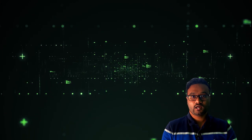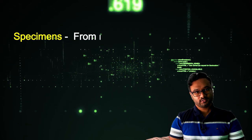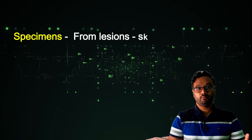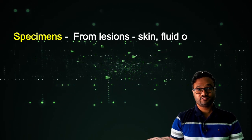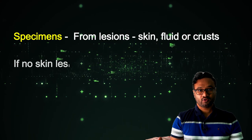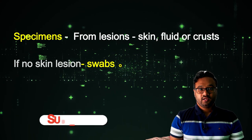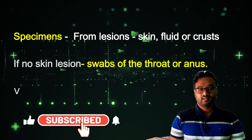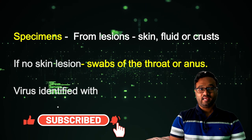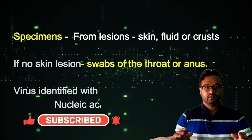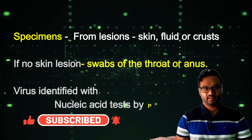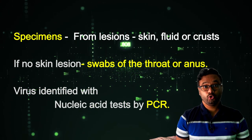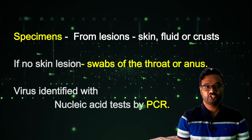For laboratory diagnosis, the best specimen is collected from skin lesions — fluid or crust. If no skin lesions are present, swabs can be collected from the anus or throat. The virus is identified by a nucleic acid test using polymerase chain reaction, or PCR.